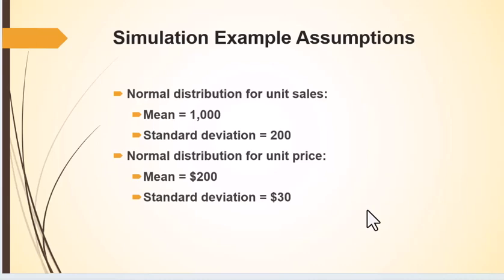Here's how this works. Let's say the normal distribution of unit sales is 1,000 with a standard deviation of 200. The normal distribution for price is $200 with a standard deviation of $30. So within plus or minus one standard deviation, the unit price is $200 plus or minus $30, and unit sales are 1,000 plus or minus 200.